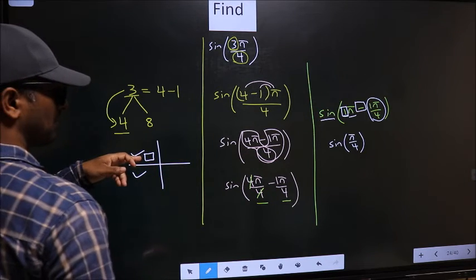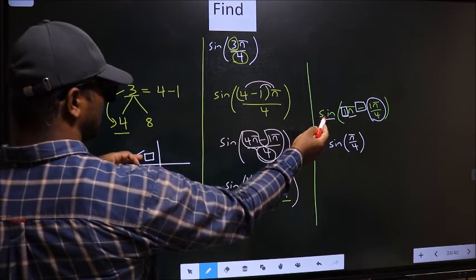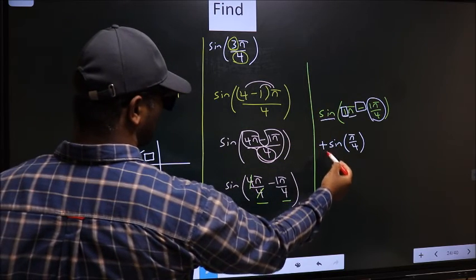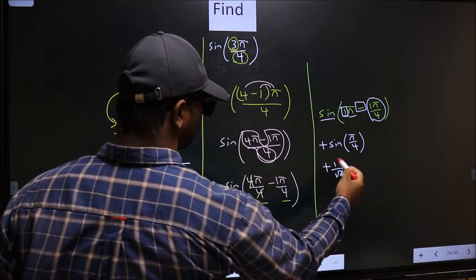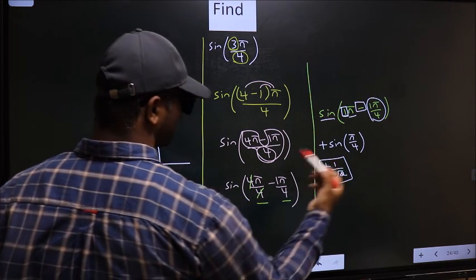And in the second quadrant sin is positive. So put plus. So plus sin(π/4) is 1/√2. This is our answer.